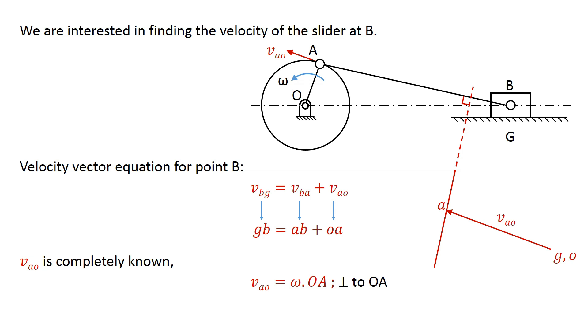To locate the point B on this line, we draw a line parallel to the motion of the slider through the point G. This line intersects the previous line, and the point of intersection gives us the point B. We indicate the directions on the velocity diagram in accordance with the vector equation.